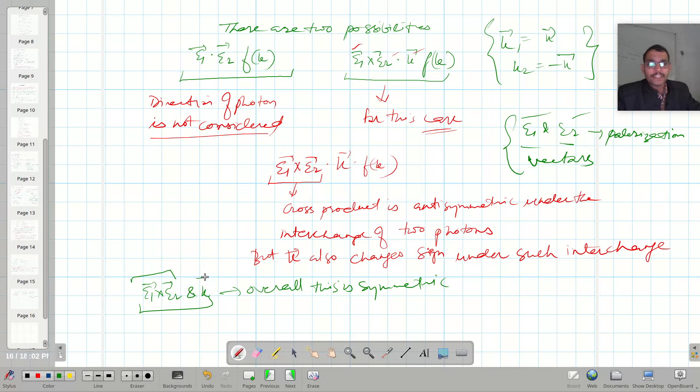So that means if I consider collectively epsilon 1, epsilon 2 and k, overall this is symmetric. Because this also changes sign and this also changes sign, so their product is symmetric. And symmetry is the property for the bosonic system.